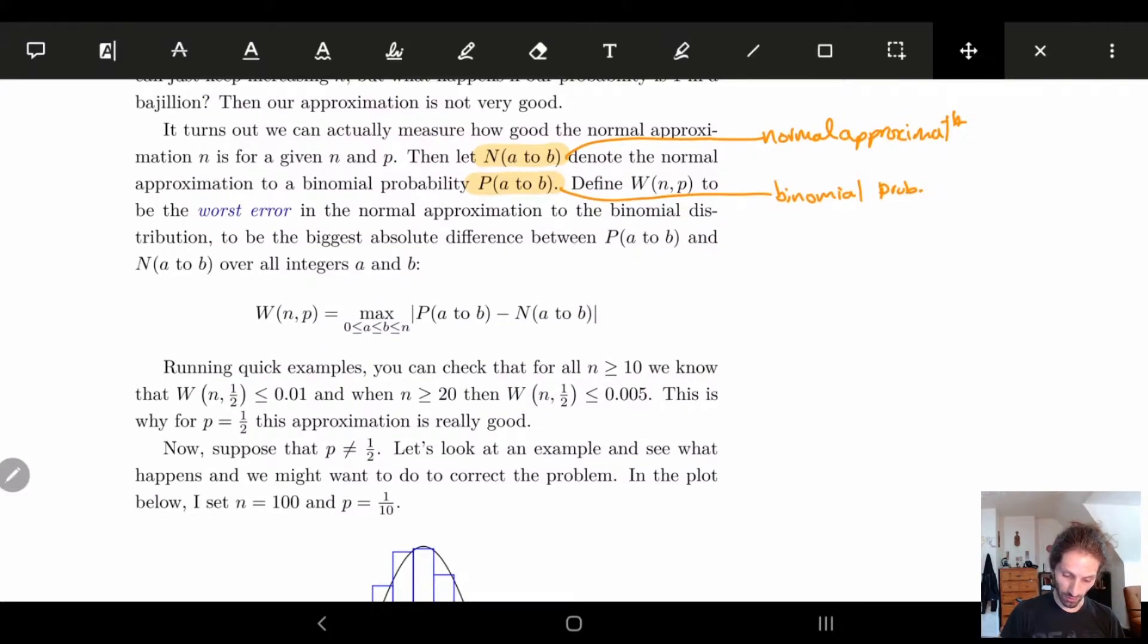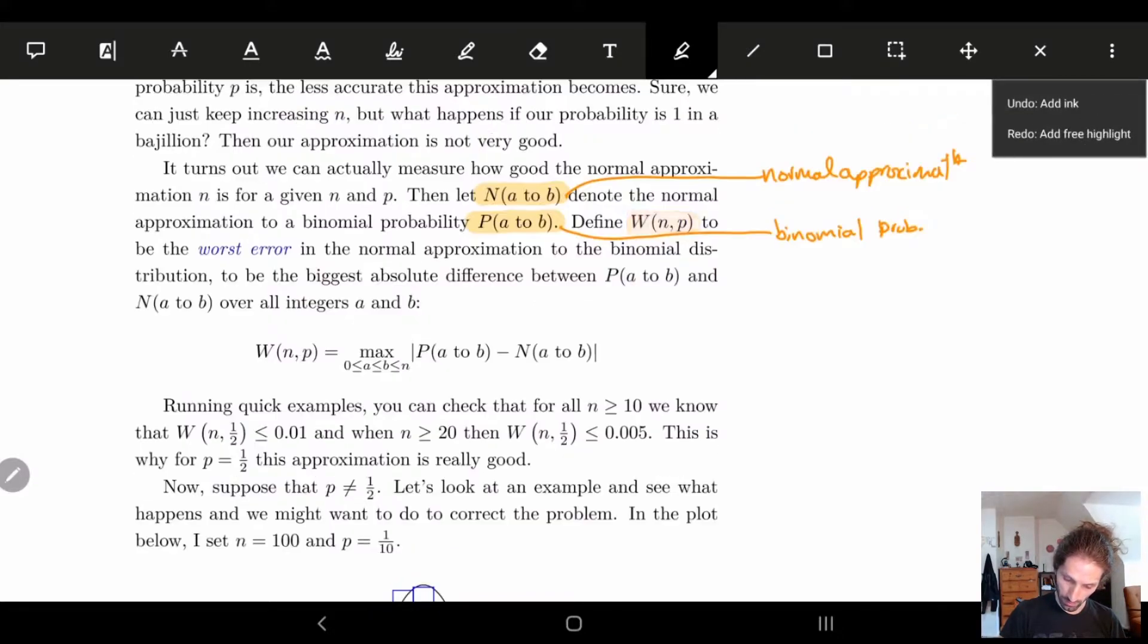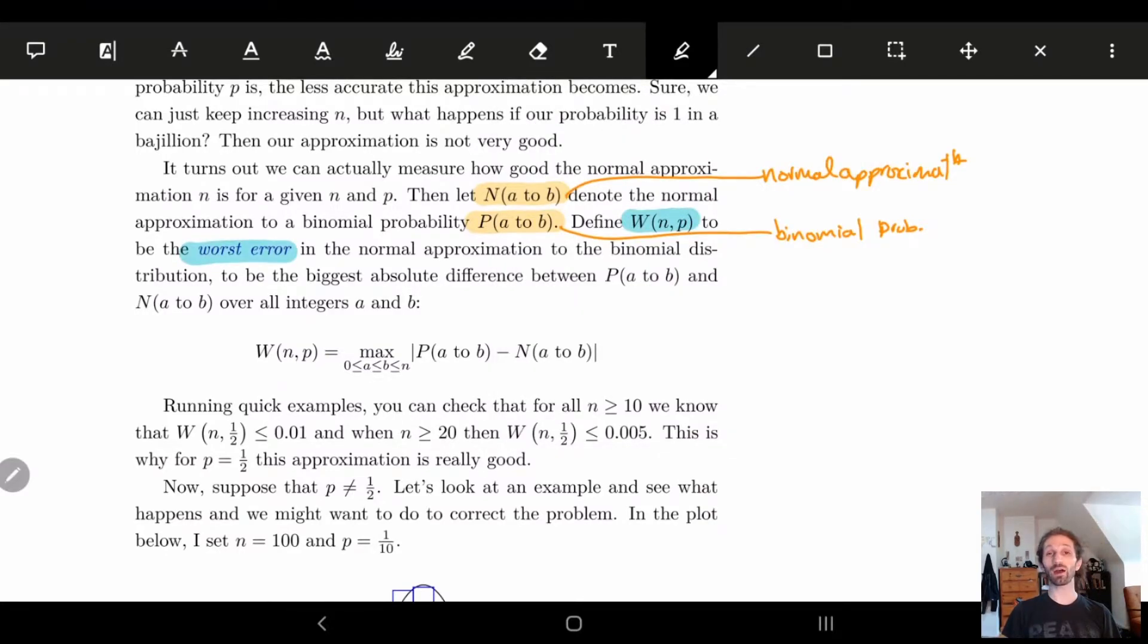And we're going to define a value W(n,p) which is basically going to be the worst error. It's how bad our error is from the normal approximation to the binomial probability.